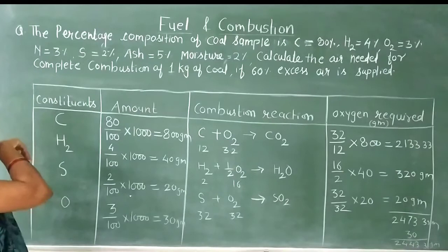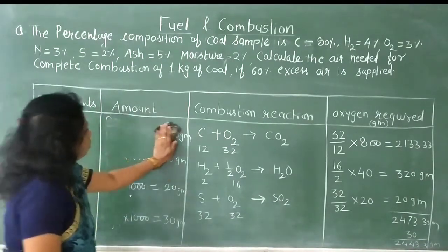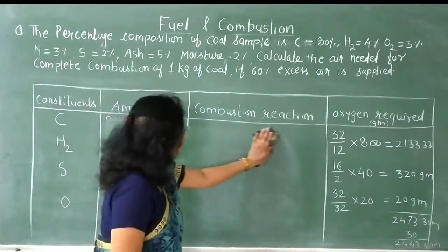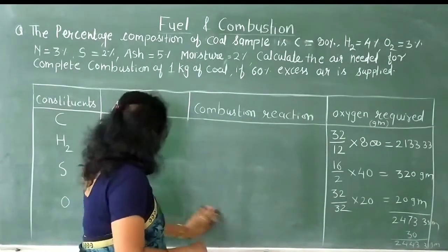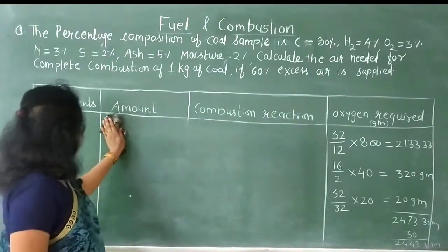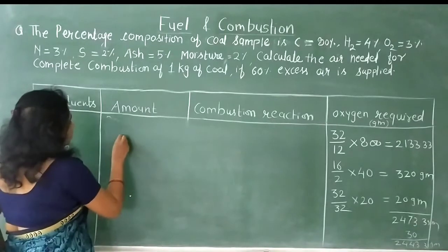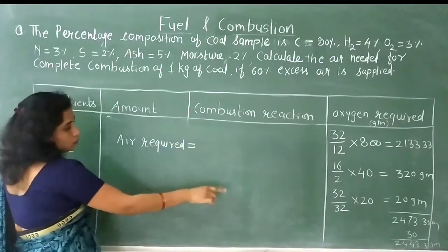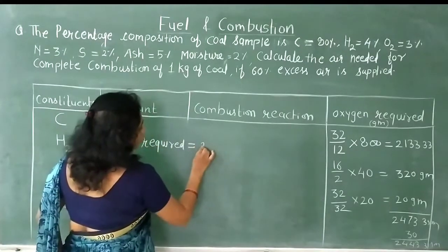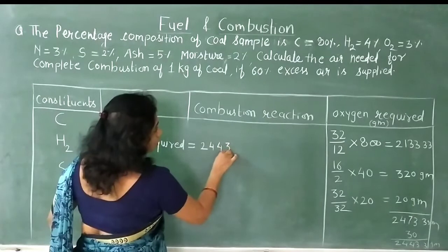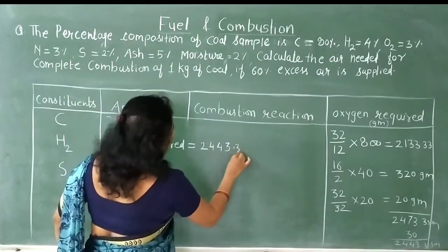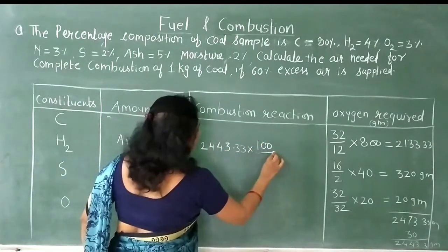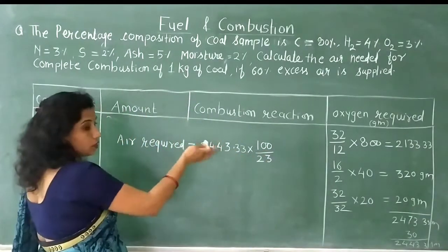Now we need to find the air required. The formula is based on the fact that by weight, oxygen is 23% present in air. So: Air Required = Oxygen Required × (100/23) = 2443.33 × (100/23).